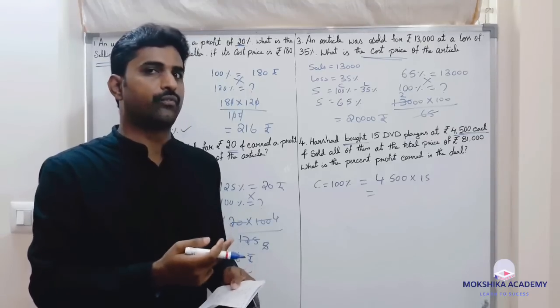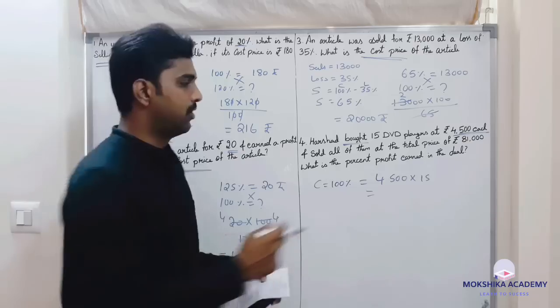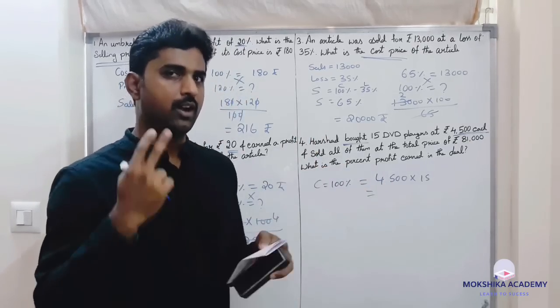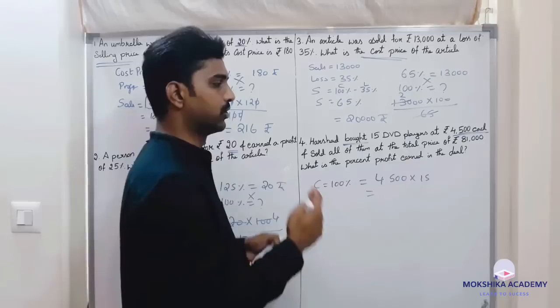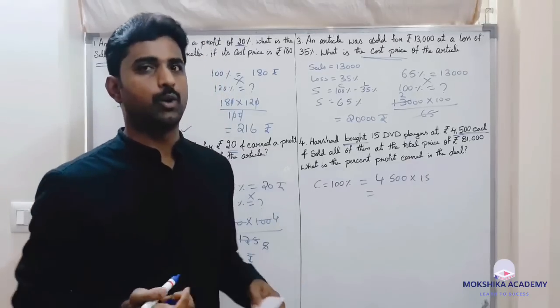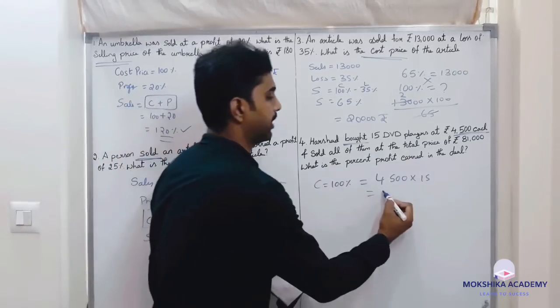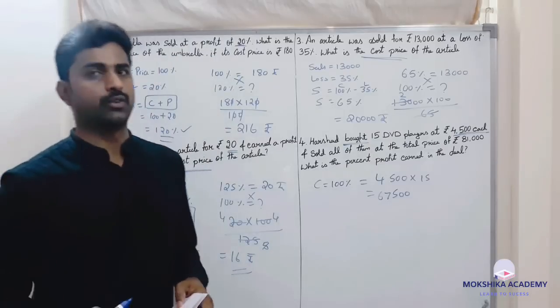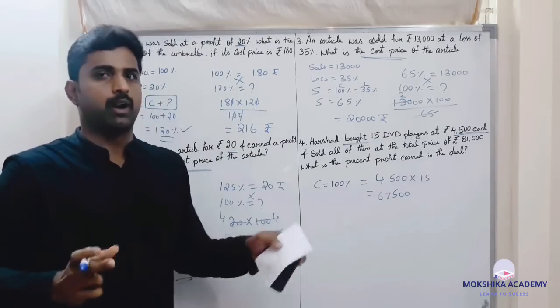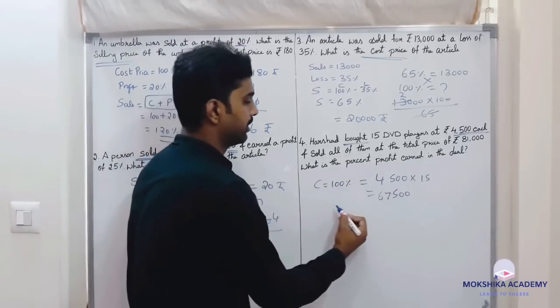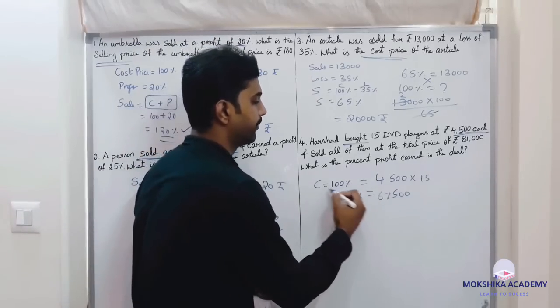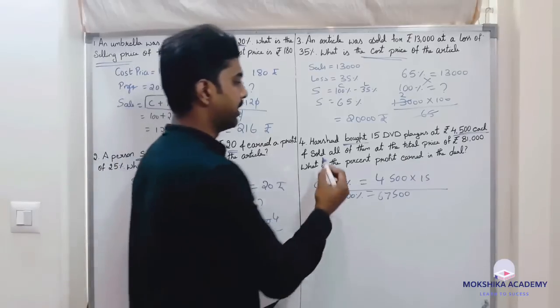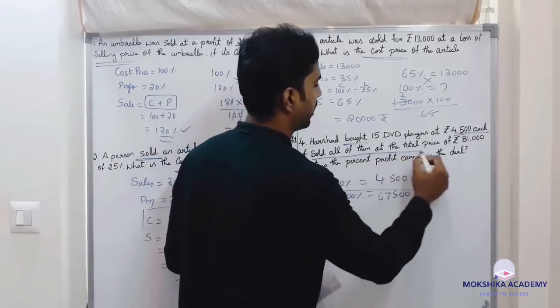Half of 4,000 is 2,000, half of 500 is 250, so 2,250. 45,000 plus 22,500 is 67,500. So cost price, that is 100 percent, is 67,500.